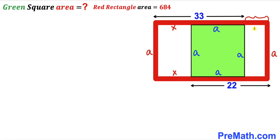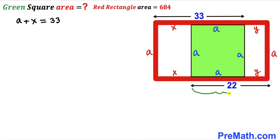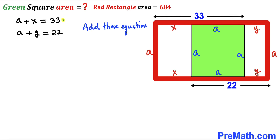Let's assume the right side length is y. Now, the top segment of 33 units equals a plus x, so we write: a + x = 33. Likewise, the bottom segment of 22 units equals a plus y, so we write: a + y = 22. We now have these two equations and will add them together.